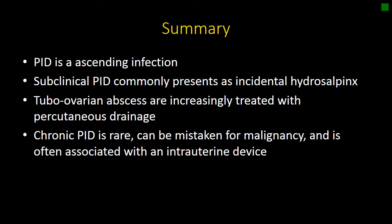In summary, pelvic inflammatory disease is an ascending infection, commonly from a sexually transmitted disease but also from GI or respiratory flora within the vagina. It proceeds from the cervix to the uterus to the fallopian tubes to the ovaries and then to the peritoneal cavity. Subclinical PID is an important entity because it results in infertility and can predispose people to ectopic pregnancy — it is an active infection without symptoms, so when you see hydrosalpinx, it's important to include that in your impression.